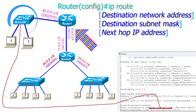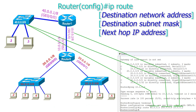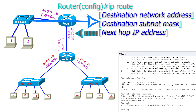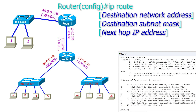Let us add a static route on router 0 for subnet 40. Run the ip route command in global configuration mode. Specify the network address and subnet mask of subnet 40, and use the IP address configured on router 1's interface connected to this router. It adds a static route for subnet 40 to the routing table. To verify, view the routing table entries again — the routing table uses the letter S to represent static routes.